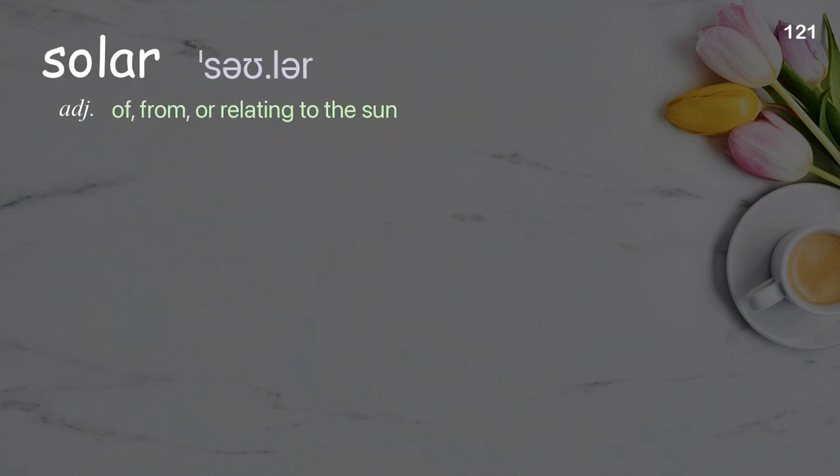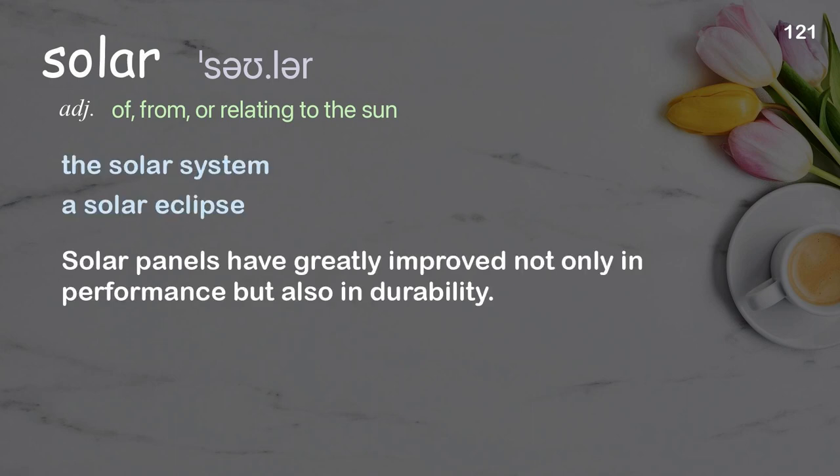Solar: of, from, or relating to the sun. Examples: the solar system, a solar eclipse. Solar panels have greatly improved not only in performance, but also in durability.